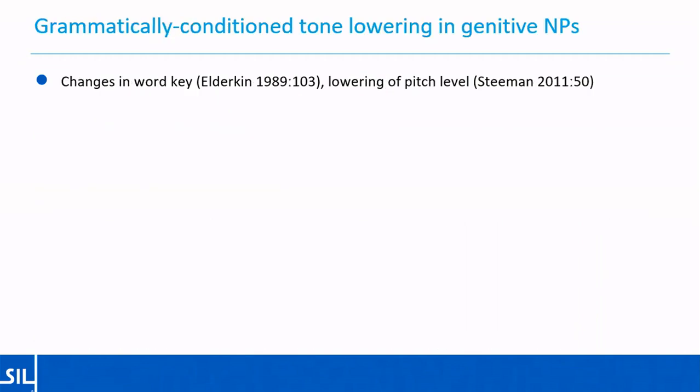Let's move on to look at what I'm actually going to talk about: grammatically conditioned tone lowering. This terminology corresponds to what Elderkin refers to as changes in word key, and another linguist, Stamen, calls this the lowering of the pitch level. Our understanding of the phenomenon is largely comparable as far as I can tell, but we have used different terminology. There are some differences in how we characterize the extent of the tonal changes of the affected words, which I'll mention in a moment.